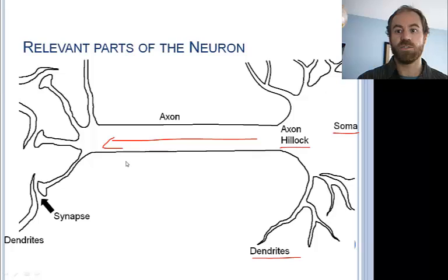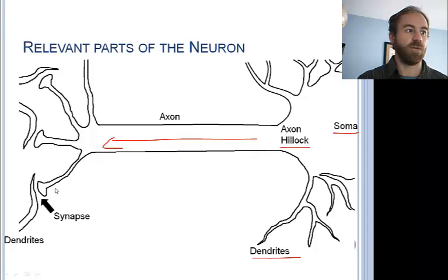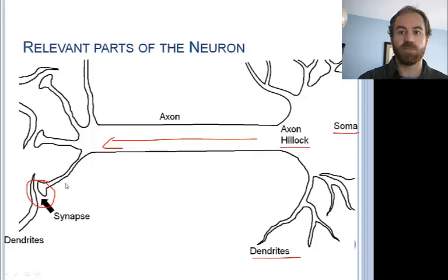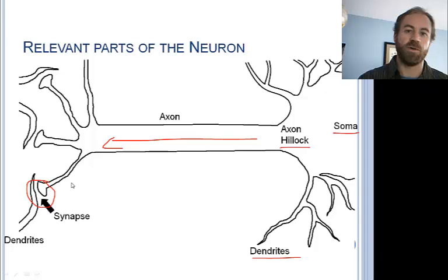The neuron in this drawing is also shown to make a connection with a dendrite of another neuron. This connection is called the synapse. You can see that this particular neuron has made several synaptic connections, either with one other neuron or with many other neurons.